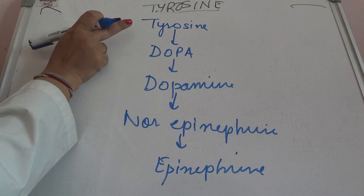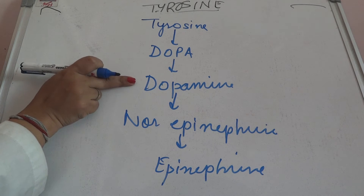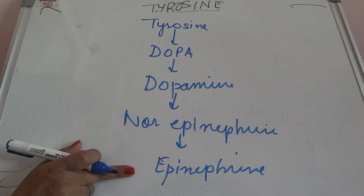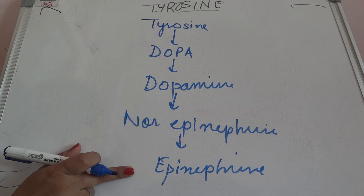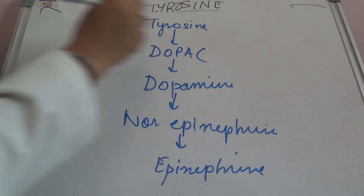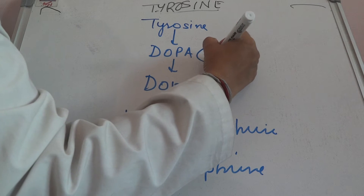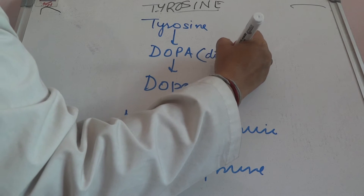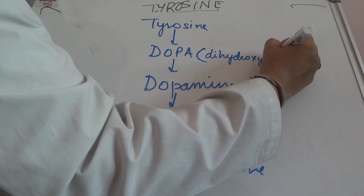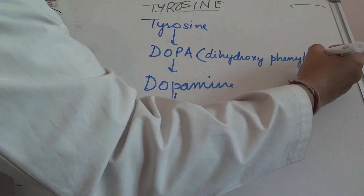The first point is remembering: tyrosine forms DOPA, DOPA forms dopamine, dopamine forms norepinephrine, norepinephrine forms epinephrine. The second important point is DOPA. The full form of DOPA is dihydroxyphenylalanine — dihydroxy-phenylalanine.